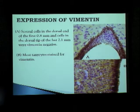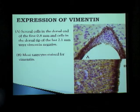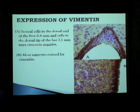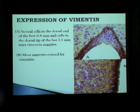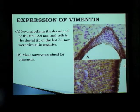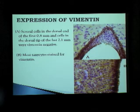Coming to my results, this shows the staining pattern of vimentin. When we stained for vimentin, we observed that several cells in the dorsal end of the first 0.8 mm and the last 2.1 mm were vimentin-negative. To explain what I mean by vimentin-negative: the third ventricle again — the purple cells you see are vimentin-negative, whereas the brown cells are all vimentin-positive. And so we can see a clear pocket of cells which are vimentin-negative.